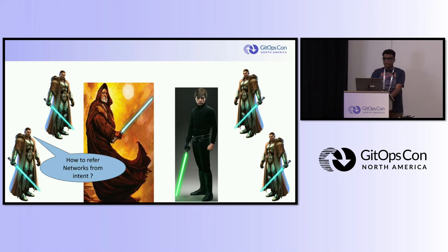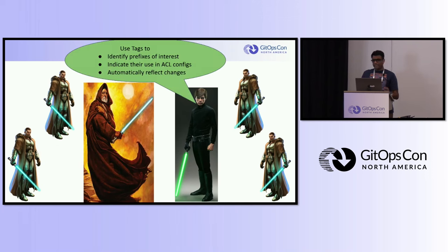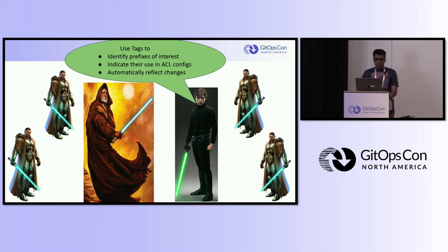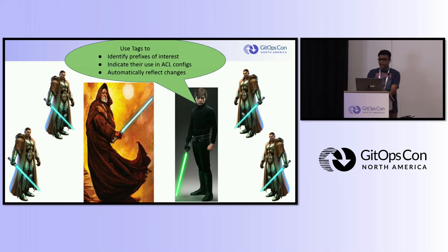The next question is how to identify your network of interest from your intent. You can use a tag-based system to identify prefixes used in ACL terms. Tag relevant prefixes with meaningful labels such as ACL inbound or ACL outbound to indicate their intended use. By tagging prefixes in the source of truth, you can easily add or remove them from ACL terms without modifying the ACL configuration itself, simplifying management and ensuring changes to prefixes are automatically reflected in generated ACLs.